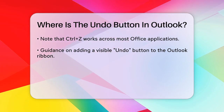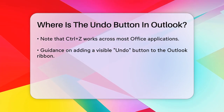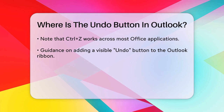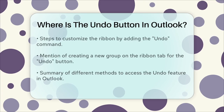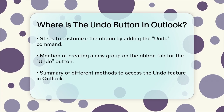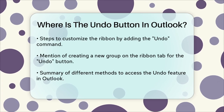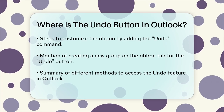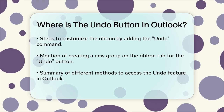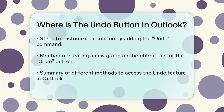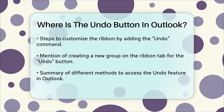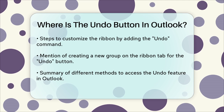If you prefer having an undo button visible on your ribbon, you can add it manually. Go to File, Options, Customize Ribbon, select All Commands from the drop-down menu, find the undo command, and add it to your ribbon. You might need to create a new group on the selected ribbon tab to add this command.